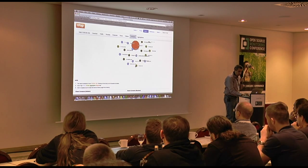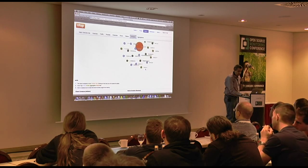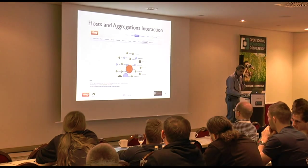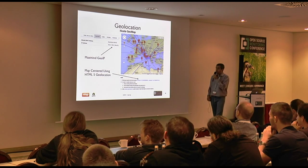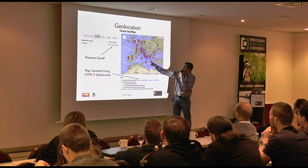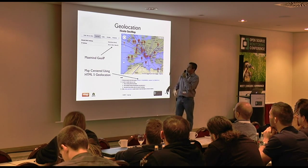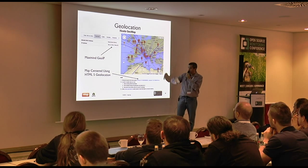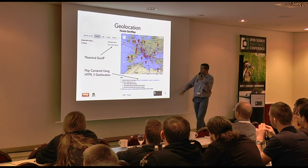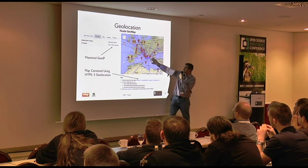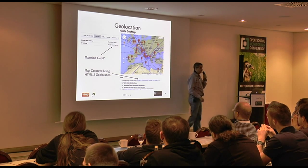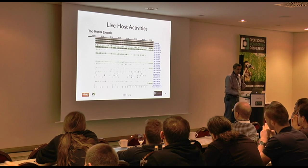If you want, you can click on one of those, expand it, move it, do whatever you want. There is also the geomap — you can see animated maps with icons that move. You can see host by host, IP by IP, where your traffic is going. It uses HTML5 geolocation, so this map is centered to Nuremberg right now because I used HTML5 geolocation. Your map is centered to the right place.